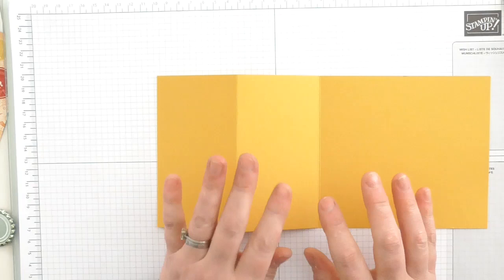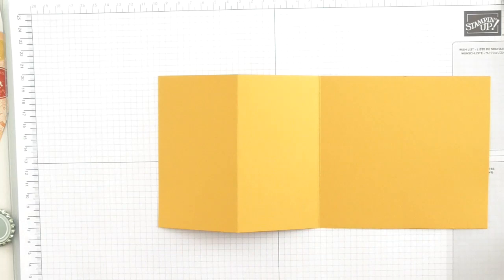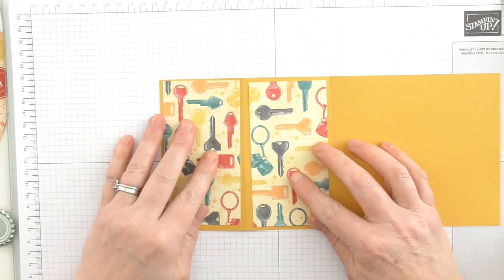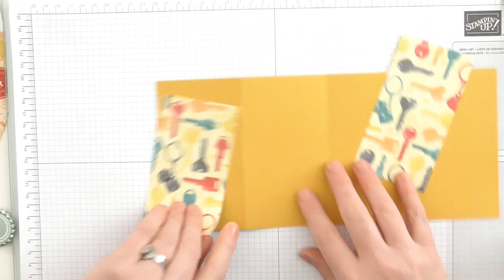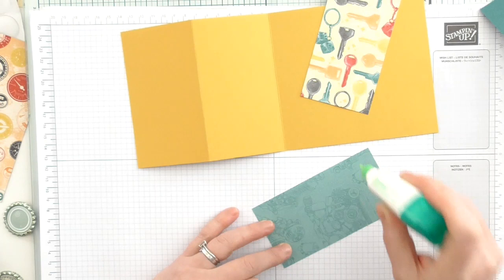What I'm going to do now is layer with some of the Classic Garage DSP. I have pre-cut it and I'll go through the measurements as I'm going. The papers in this paper stack are awesome fun.